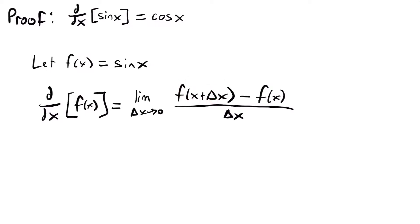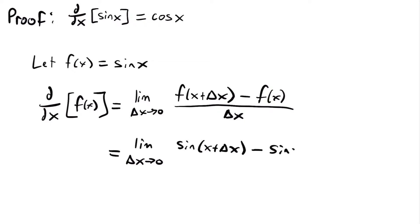Now if we replace f of x with sine x, because that's what we said f of x is equal to, then the derivative will be equal to the limit as delta x approaches 0 of sine of x plus delta x minus sine x divided by delta x. Here's where it gets a little tricky, because to simplify this, we need to remember a trigonometric identity.